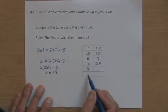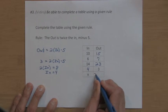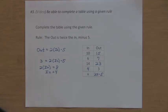And the last one gives me an in of x. So I want you to use just a variable in place of the word in. So instead of two times the in minus five, the out is going to be two times x, or 2x minus five.